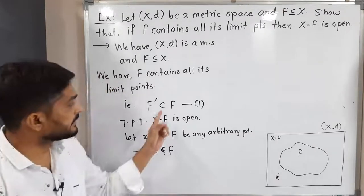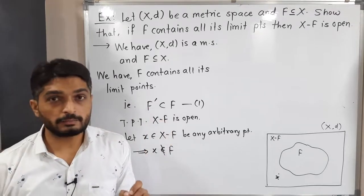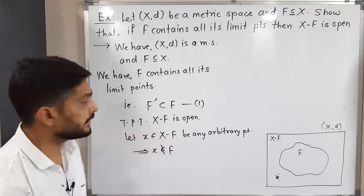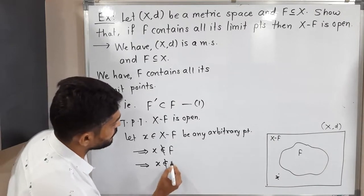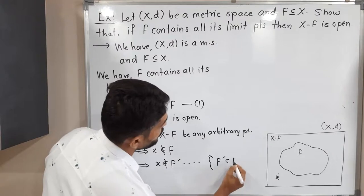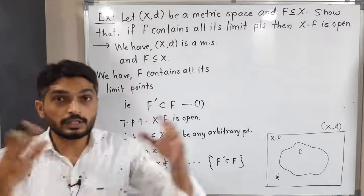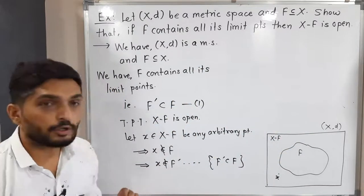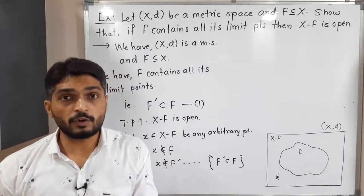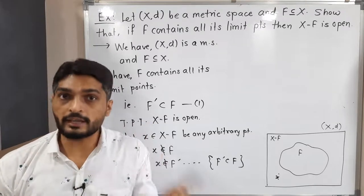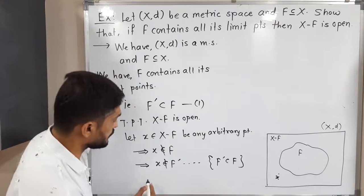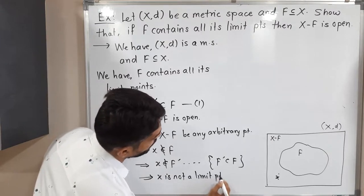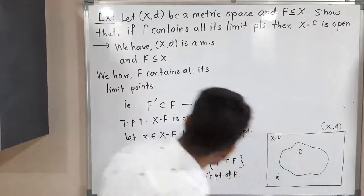Since x does not belong to F, and F prime is a subset of F, if x is not in the superset F, then it cannot be in the subset F prime either. Therefore x does not belong to F prime. But F prime is the set of all limit points of F, so x is not a limit point of F.